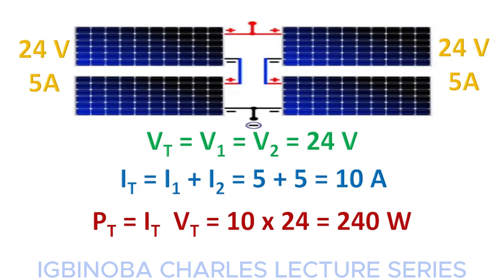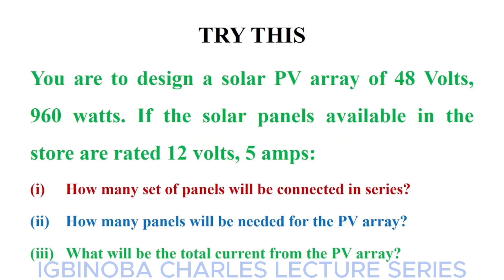When panels are connected in series-parallel, the aim is to increase both voltage and current. Compare this to connecting in series only — which increases voltage while keeping current constant — or connecting in parallel only — which increases current while keeping voltage constant. In series-parallel, you increase both voltage and current, and that is the basic reason why panels are connected in series-parallel.